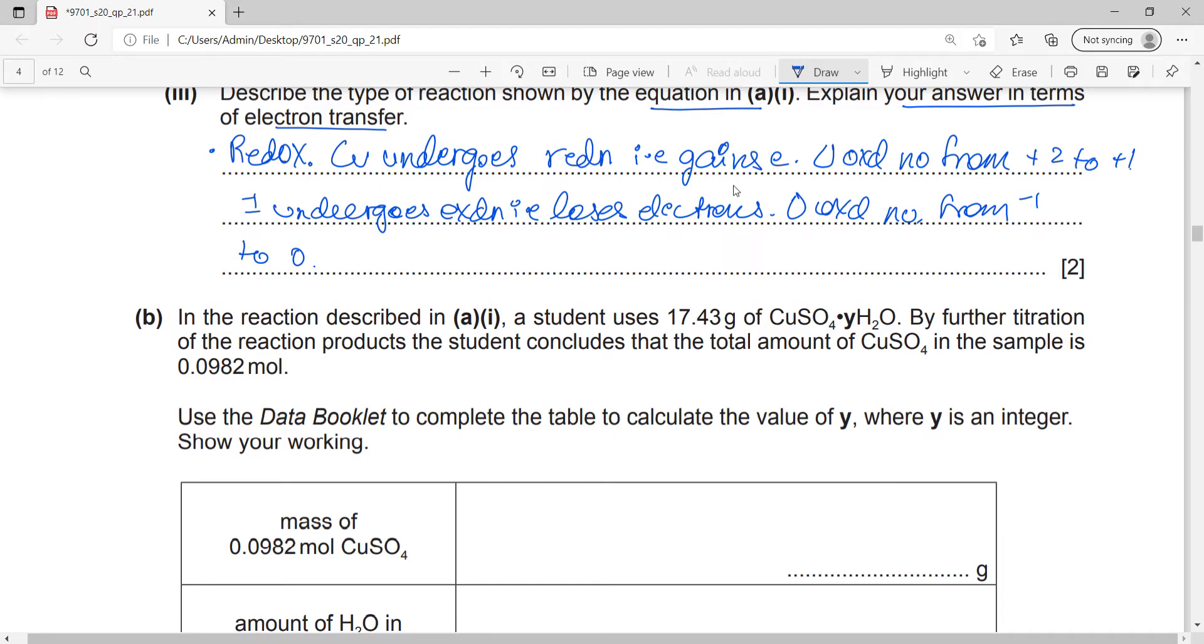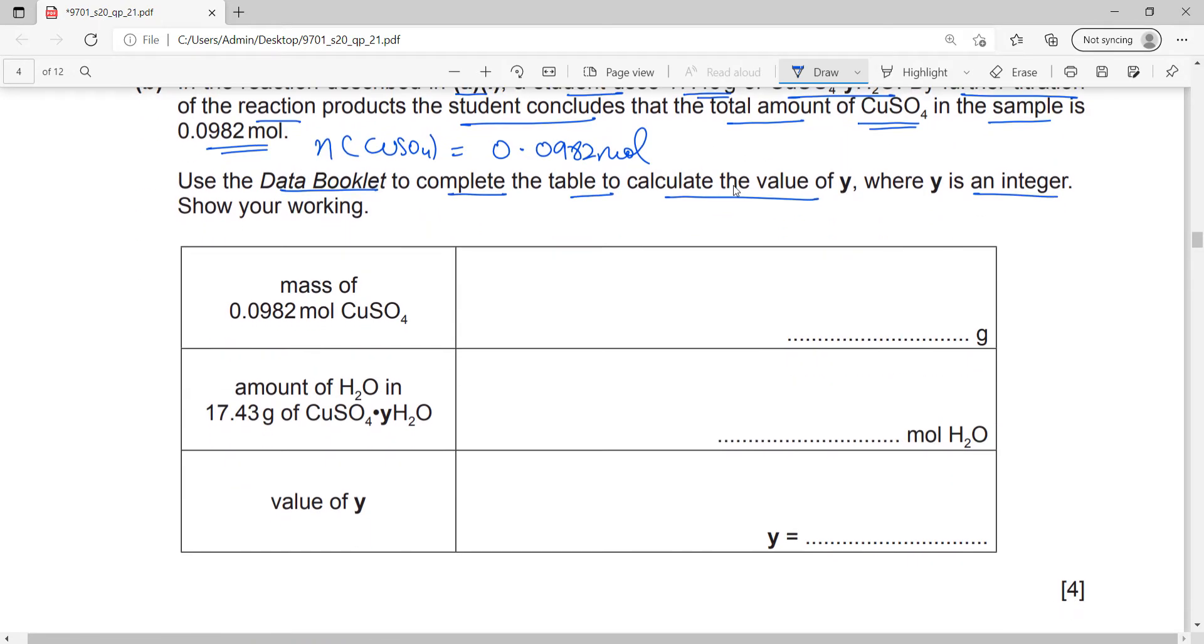In the reaction described in A1, the student uses 17.43 grams of hydrated copper sulfate. This is the whole mass. By further titration of the reaction products, the student concludes that the total amount of copper sulfate in the sample is 0.0982 moles. So the moles of CuSO4 alone, not hydrated, is 0.0982 moles. Use the data booklet to complete the table to calculate the value of Y, where Y is an integer, show your working. Integer meaning whole number.